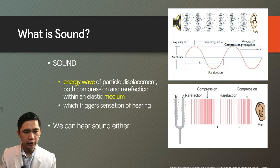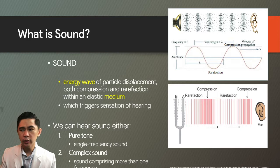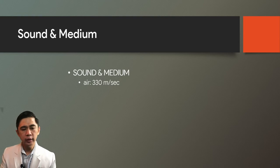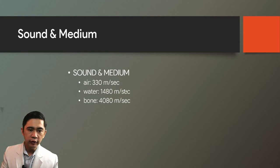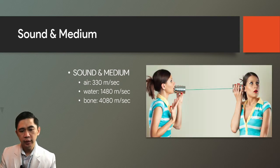We can hear sound either as a pure tone, which comprises a single frequency, or a complex sound comprising more than one frequency. Sound can travel differently in different mediums: in air, sound travels at 330 meters per second; in water, 1,480 meters per second; and in bone, 4,080 meters per second. Sound travels much faster in solid mediums than in air. This is the basis of the tin can telephone—when you speak, sound travels through the solid string connecting both tin cans.